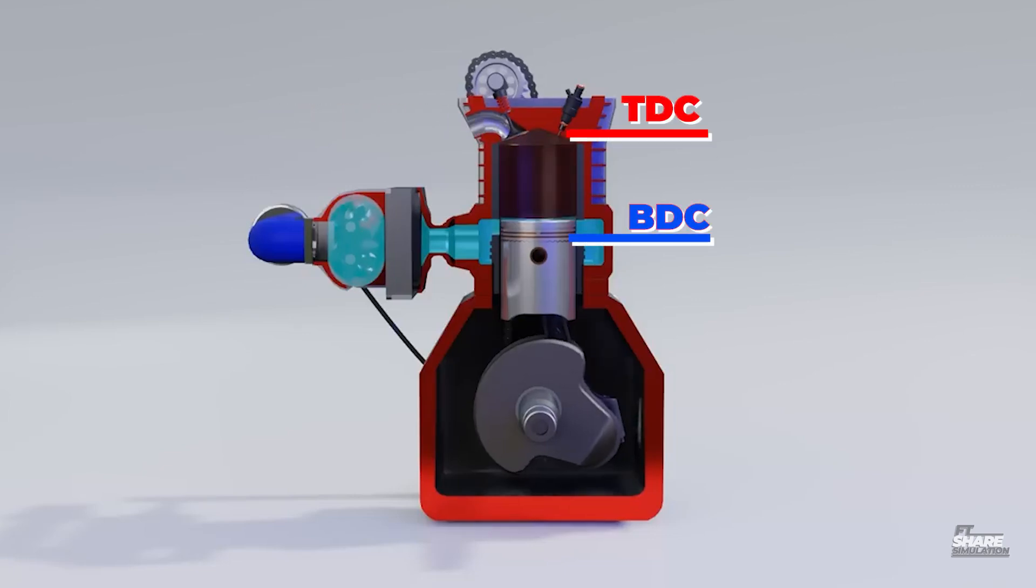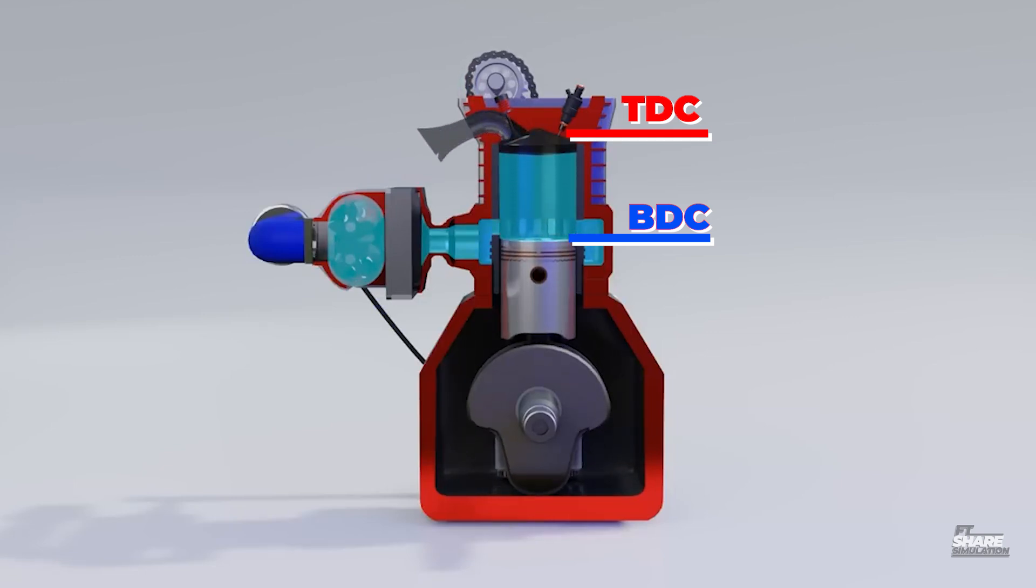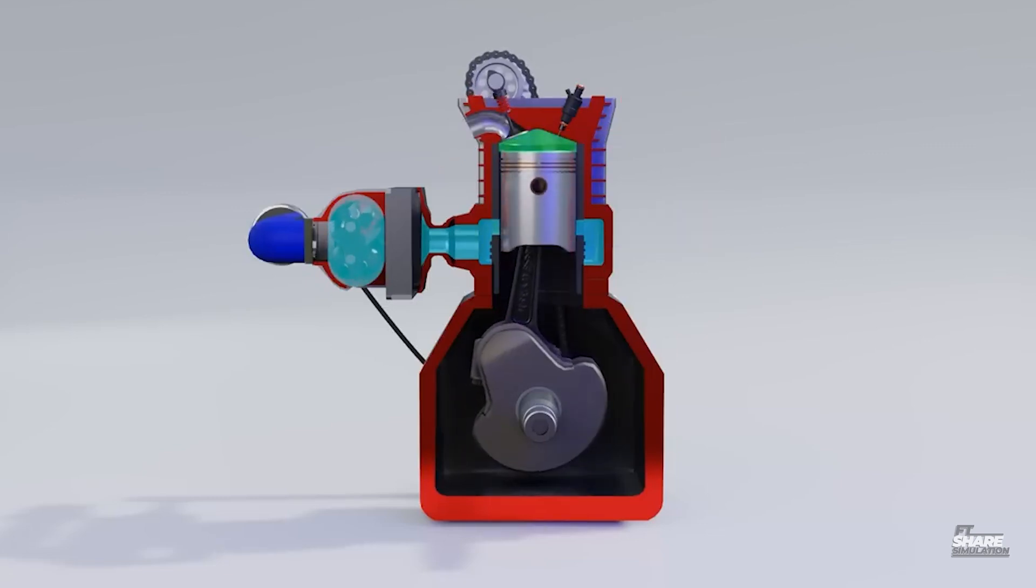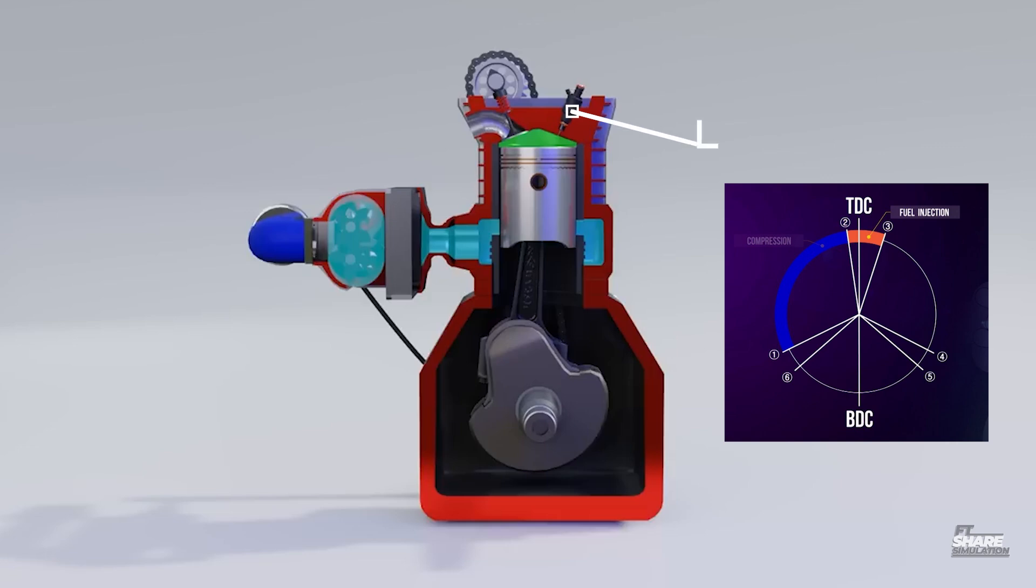When the piston is at BDC, the momentum gained from the previous ignition process will push the piston back towards TDC to compress the air. Here, the air being forcibly compressed will experience a temperature increase. Then, 15 degrees before the piston reaches TDC, the injector will supply fuel into the combustion chamber to get the right timing for self-ignition.